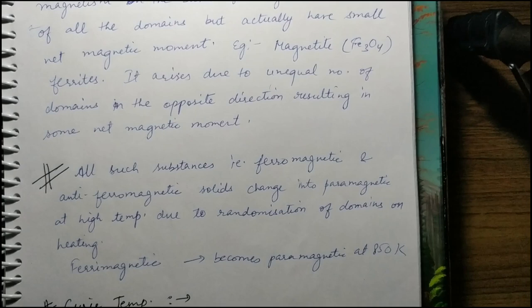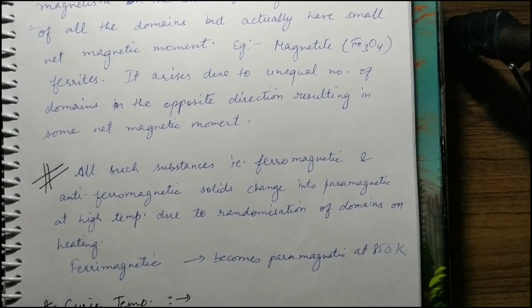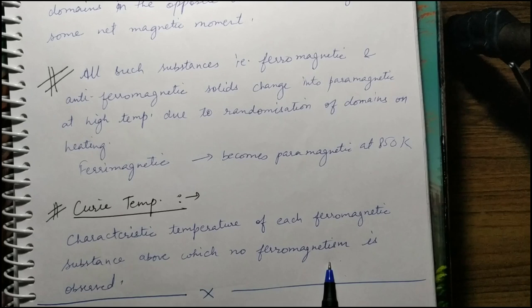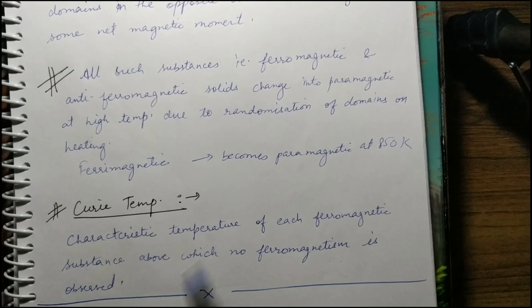Finally, we studied Curie temperature — the temperature of a ferromagnetic substance above which it will no longer show ferromagnetism. Above the Curie temperature, ferromagnetism is lost. So this is what we covered in the entire chapter.